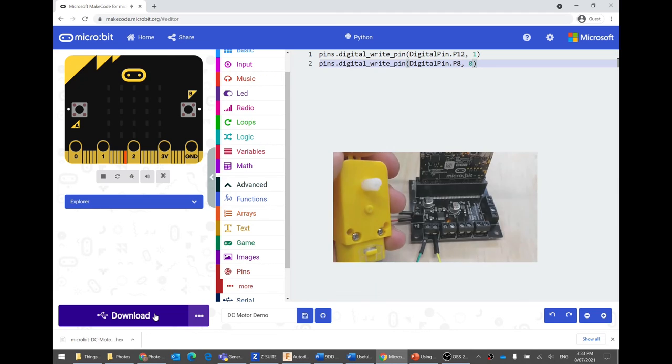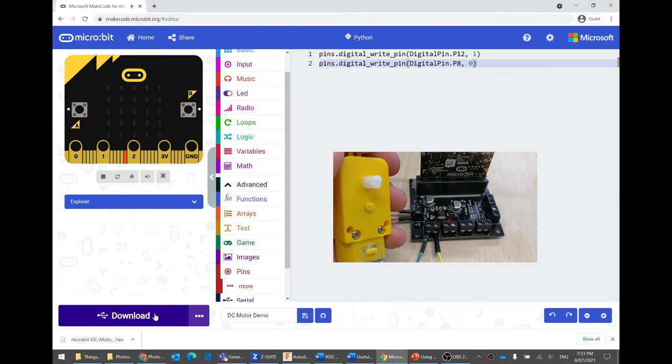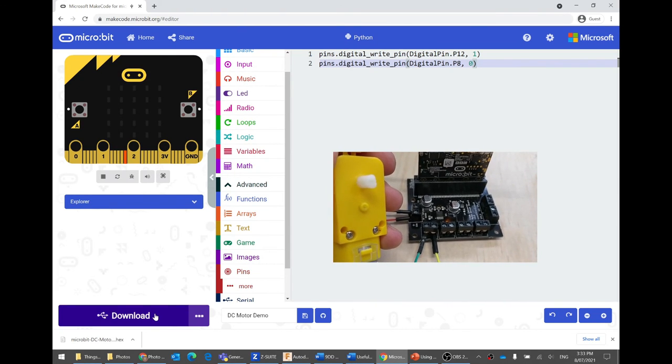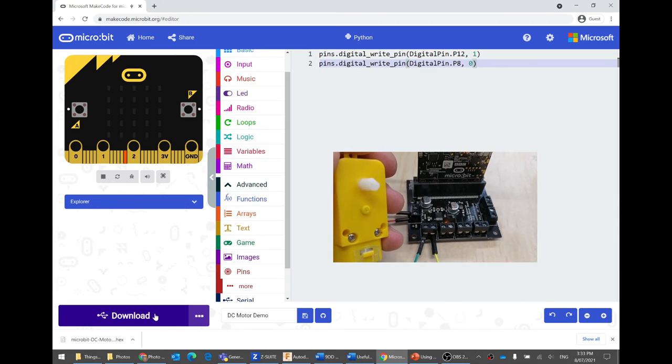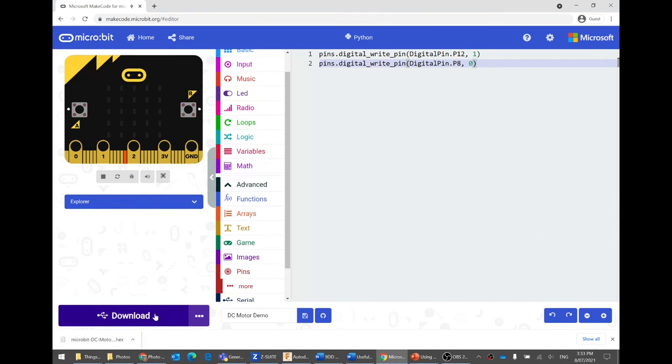So now that that program's on your micro bit, you can see the motor spinning. Yay. All right. That's how you get the motor spinning. In the next video, I will show you how to control the spinning. So you can make it pause and move backwards. Bye.